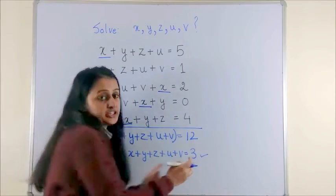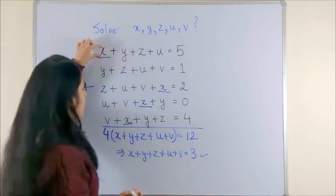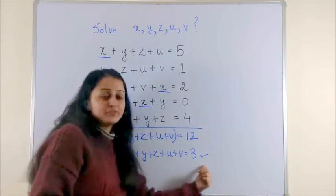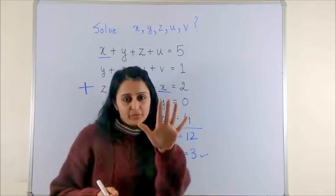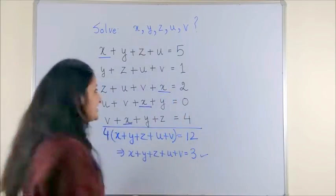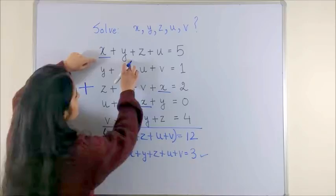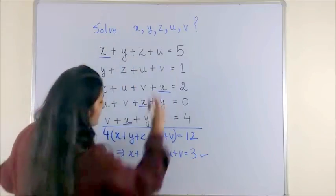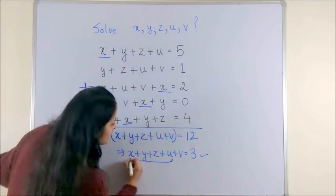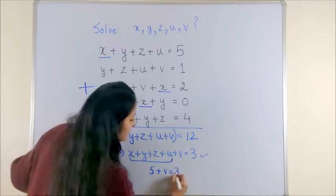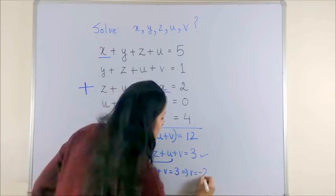Once you've reached here, it's super simple. Take all the equations one by one, subtract from this and you will get the 5th variable automatically. Here it is. So, I have x plus y plus z plus u is 5. So, if I replace this portion with 5 plus v is 3, this gives me v as minus 2.